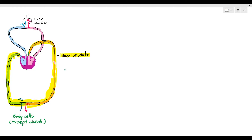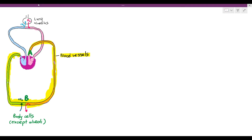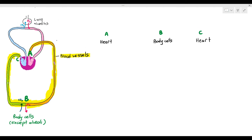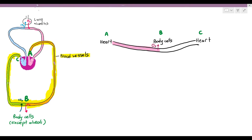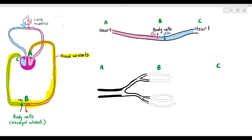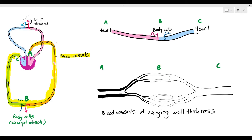Let's label a part on the systemic circulation. I've labeled A, where the blood is just coming out from the heart; B, where the blood vessels are near the body cells; and C is where the blood returns to the heart. So A represents the blood vessels going away from the heart, B is where exchange happens with the body cells, and C is the blood going back to the heart. In this diagram below, you can see blood vessels of varying wall thickness and lumen size. The lumen is just the space inside the blood vessels.